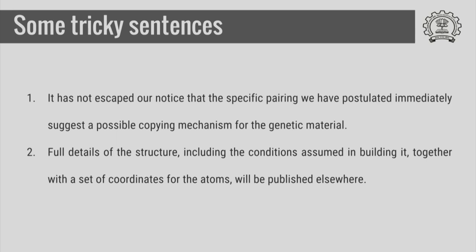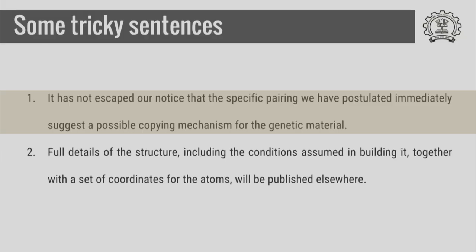What Watson and Crick are trying to do is to lay claim to certain things. The first one is to lay the claim that they have not only got the structure — they think that their suggested structure will help explain how the genetic material is copied.